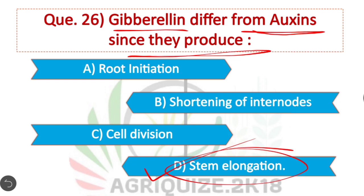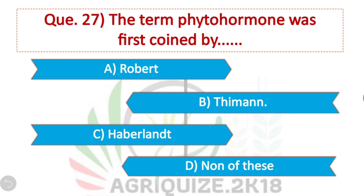Question 27: The term phytohormones was first coined by — Thimann. Option B is correct.